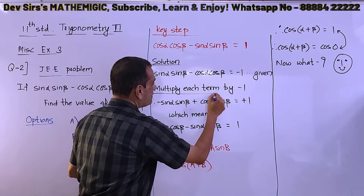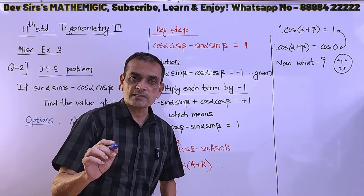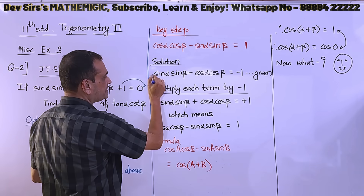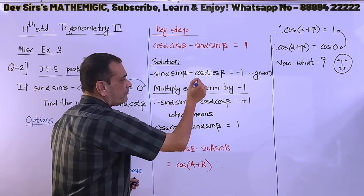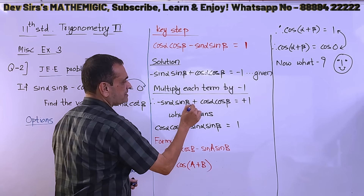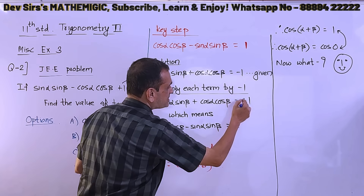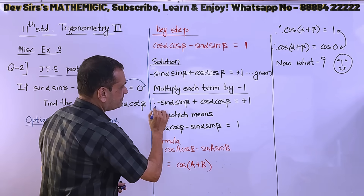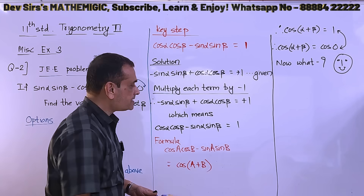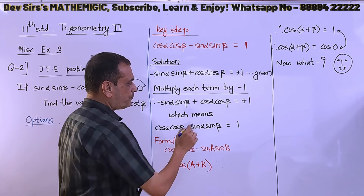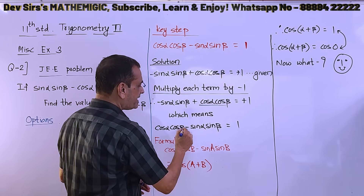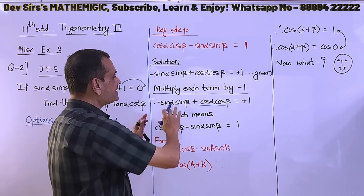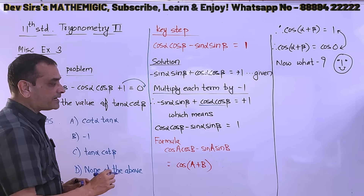Now, multiply each term by minus 1. So minus sin α sin β becomes positive, minus cos α cos β becomes plus cos α cos β, and minus 1 becomes plus 1. Rearranging the terms, we get cos α cos β minus sin α sin β equal to 1.